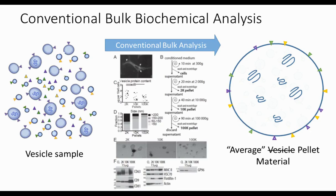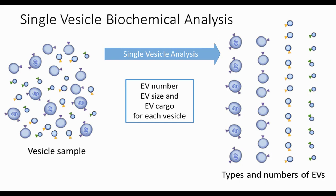Bulk biochemical analysis that reports the average or total content of a fractionated sample doesn't tell the whole story. What we would like to know is what are the different types of vesicles in that sample as defined by their size and cargo, and to tabulate these different types. To do this, we need single vesicle analysis — we need to analyze each vesicle as an individual to get this information.